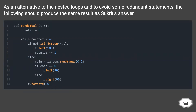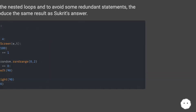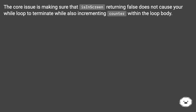As an alternative to the nested loops and to avoid some redundant statements, the following should produce the same result as Sukreet's answer. The core issue is making sure that isInScreen returning false does not cause your while loop to terminate, while also incrementing counter within the looped body.